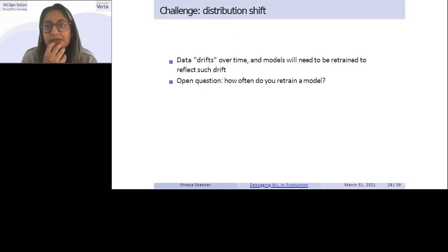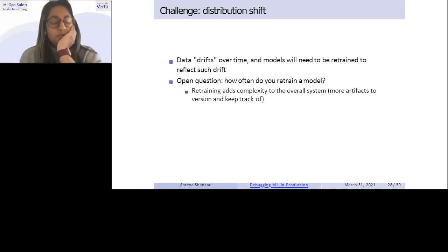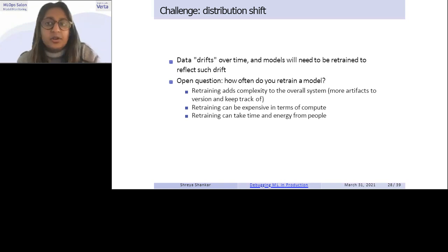So one challenge that we just saw the most obvious one is the distribution shift, right? Data drifts over time and models need to be retrained to reflect drift. And the key question that everyone asks, right? Like why do they care about data drift? It's because they want to know when to retrain their model when their model is doing poorly. So they don't have this performance degradation. So the question is, how do you, how often do you retrain the model? When do you retrain the model? And it's hard to just retrain all the time because retraining adds complexity to the overall system, right? There's more artifacts to version and keep track of lineage, and tracing are much harder. And retraining can also be expensive in terms of compute, right? Like if you're retraining learning models, those are pretty expensive to train. Retraining can also take time and energy from people, right? Somebody has to go kick off the script to train the model. Somebody has to go check the performance metrics in the model. Somebody has to promote that to production. Somebody has to approve that pull request. Somebody has to like, it's just, it's time and energy.